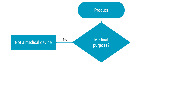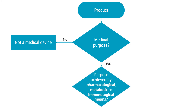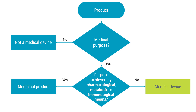But there is one more thing you need to consider before getting to that conclusion. You have to define how your product achieves its primary purpose. And this is what makes the difference between whether your product is a medical device or a medicinal product or pharmaceutical. If the purpose is not achieved by pharmacological, metabolic or immunological means, the product is likely to be a medical device. On the contrary, if the primary mode of action is pharmacological, metabolic or immunological, the device is likely to be a medicinal product.